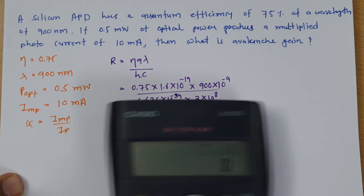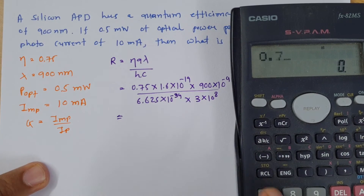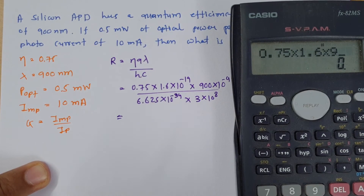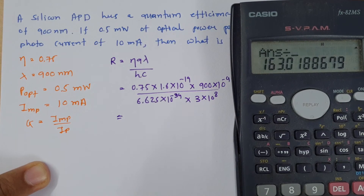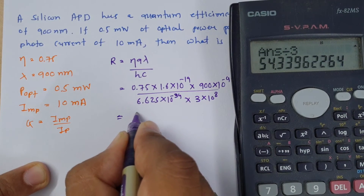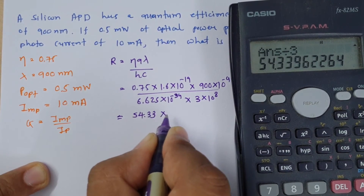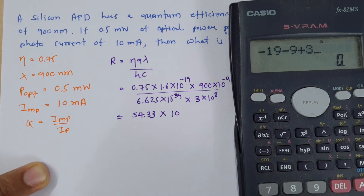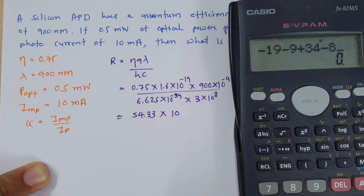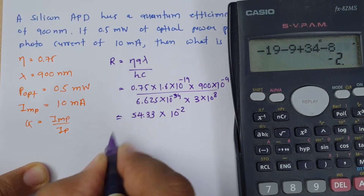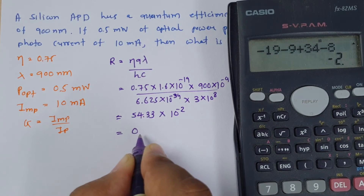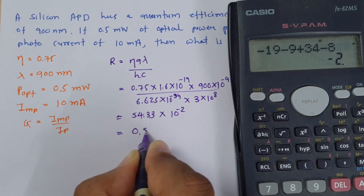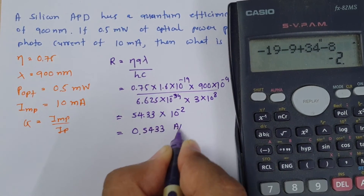Calculating: 0.75 × 1.6 × 900 divided by 6.625 divided by 3 = 54.33. For the power of ten: −19 + (−9) = −28 in the numerator; −34 + 8 = −26 in the denominator, giving 10⁻². So the responsivity R = 0.5433 ampere per watt.